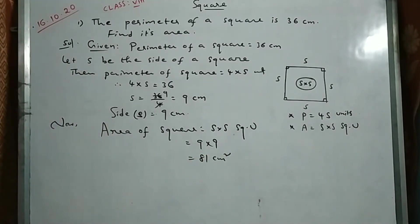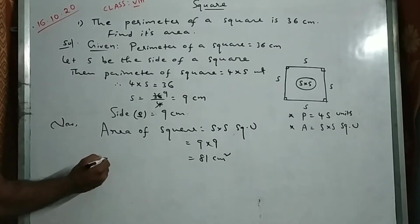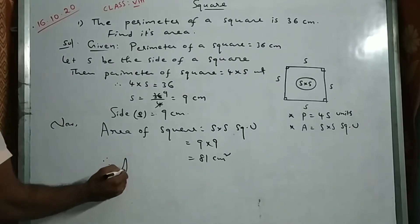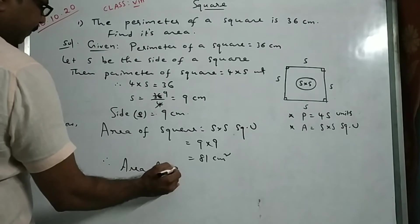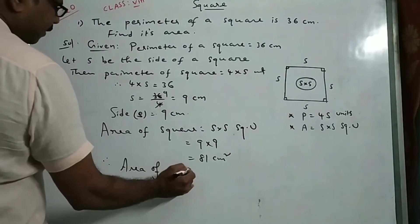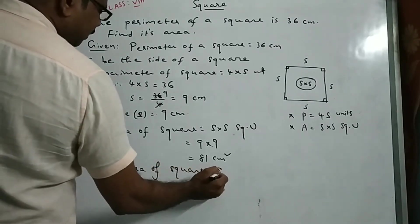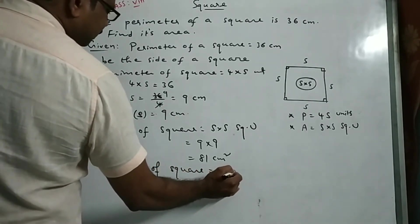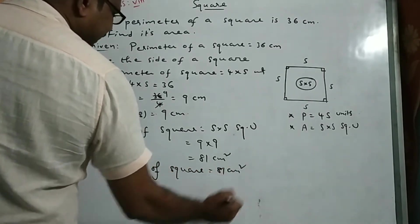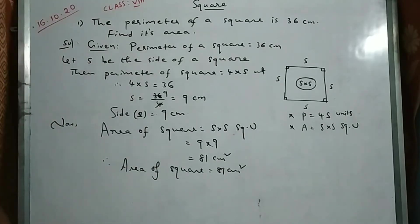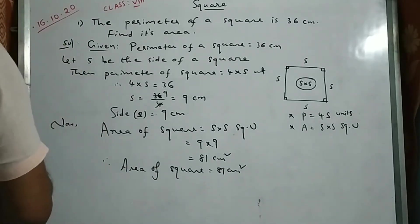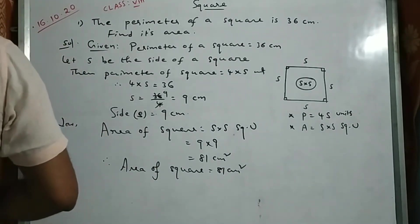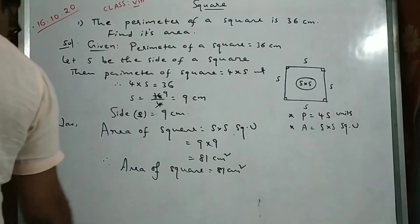Therefore, area of square is equal to 81 square centimeters. That's all — simple!